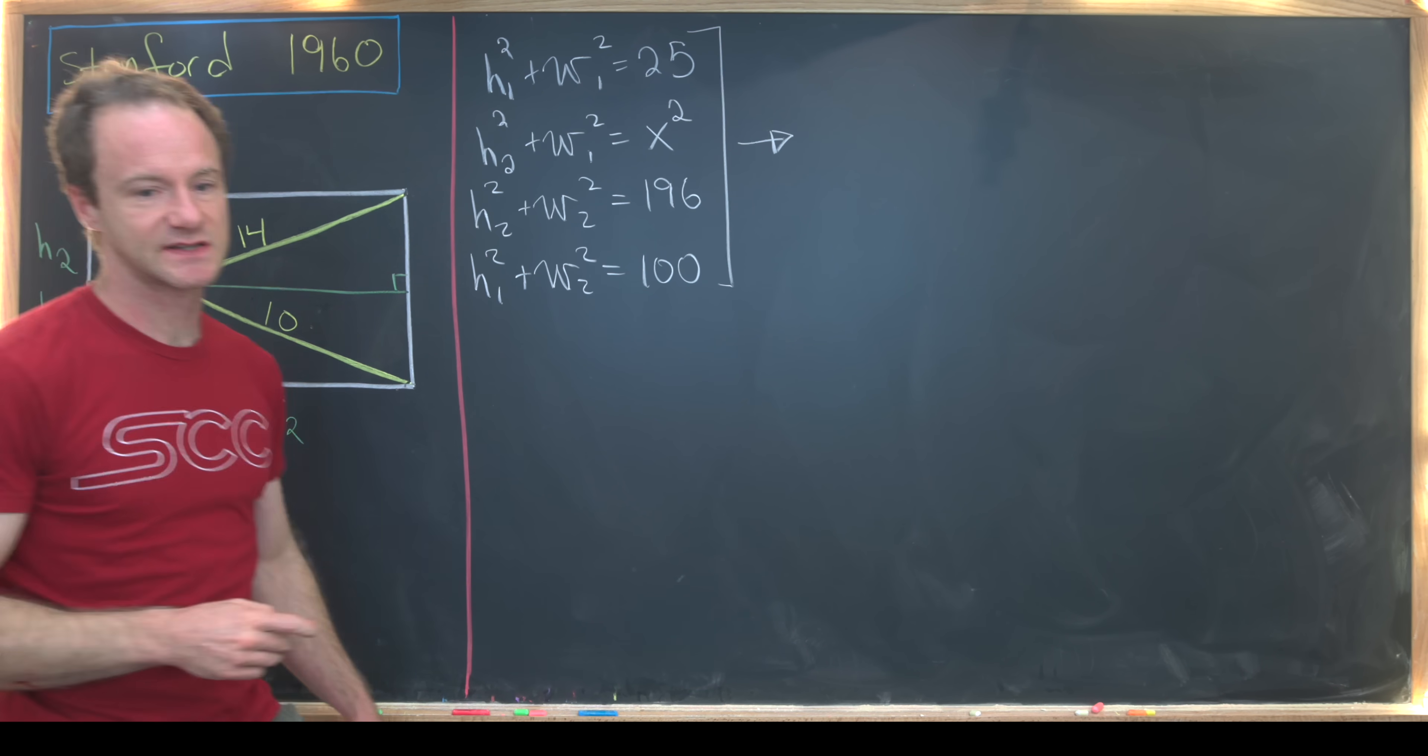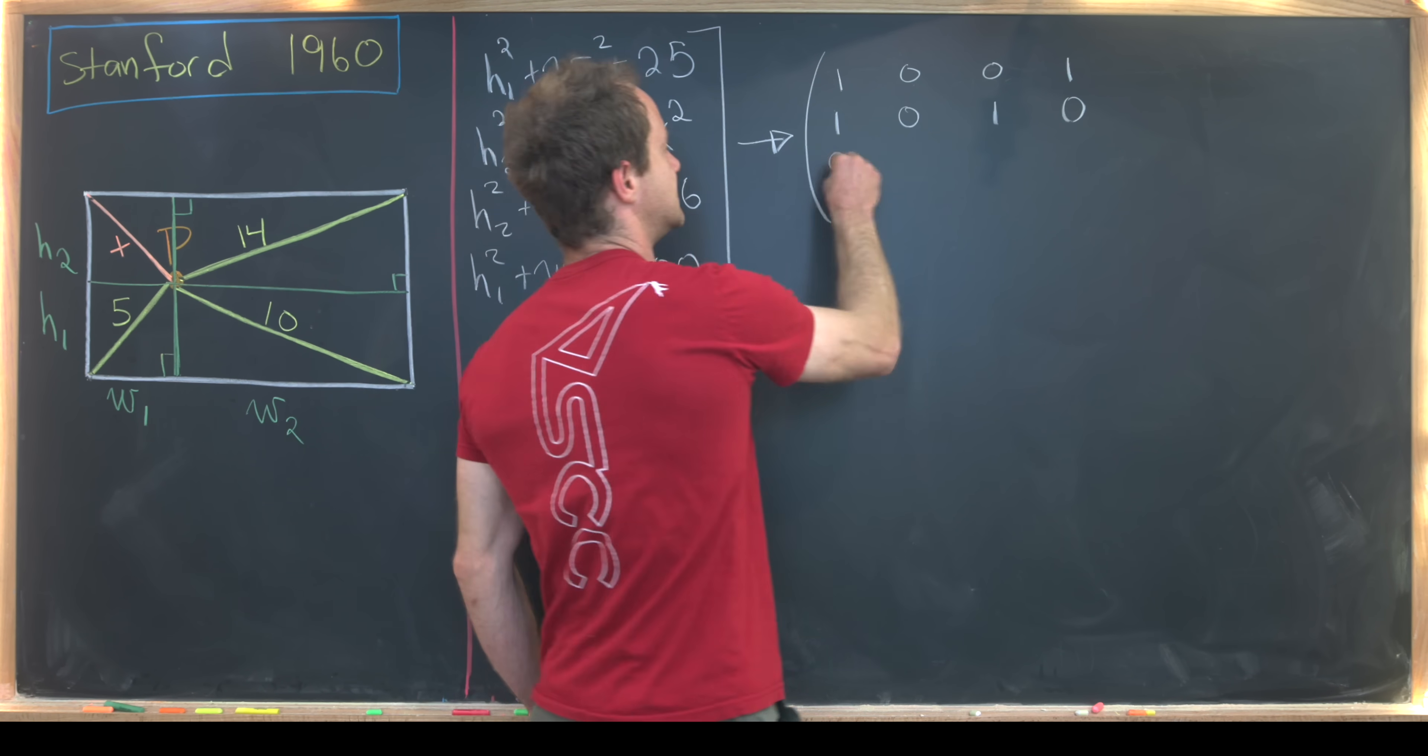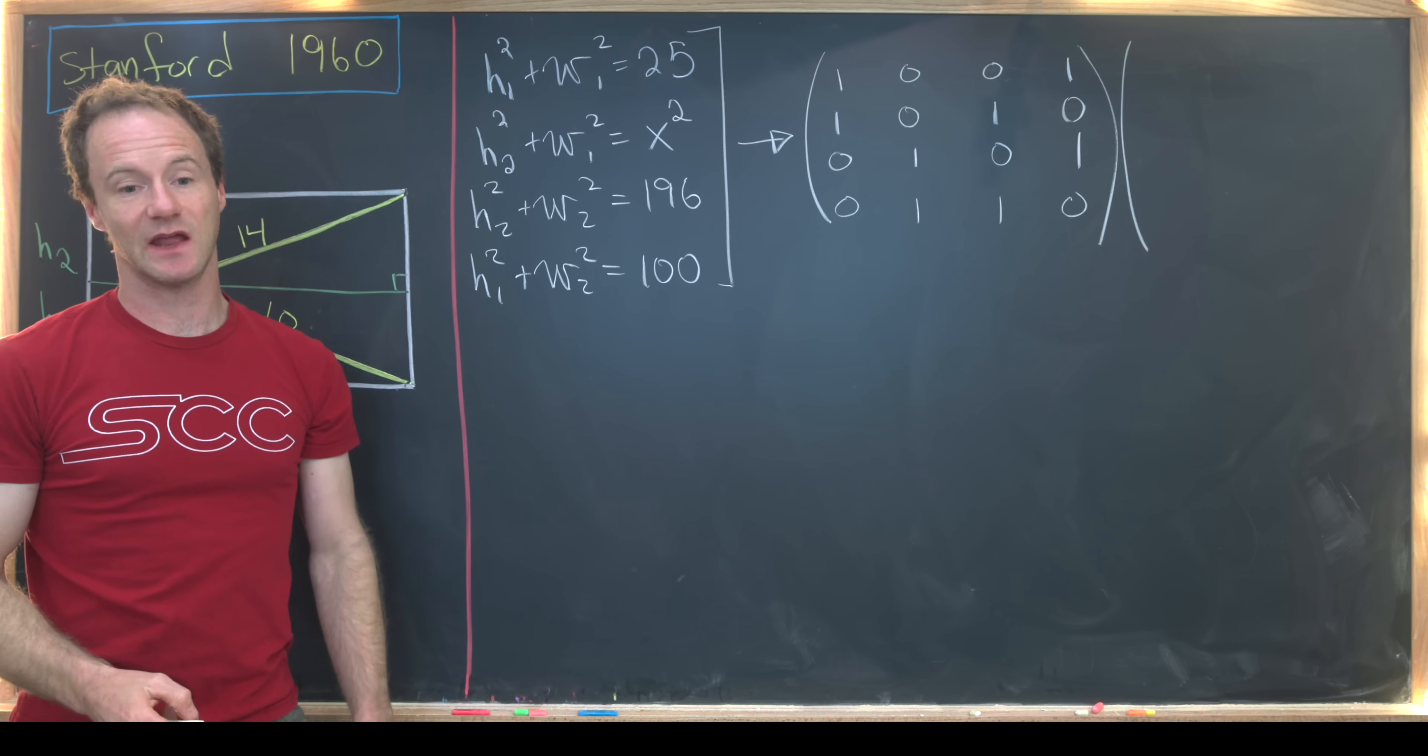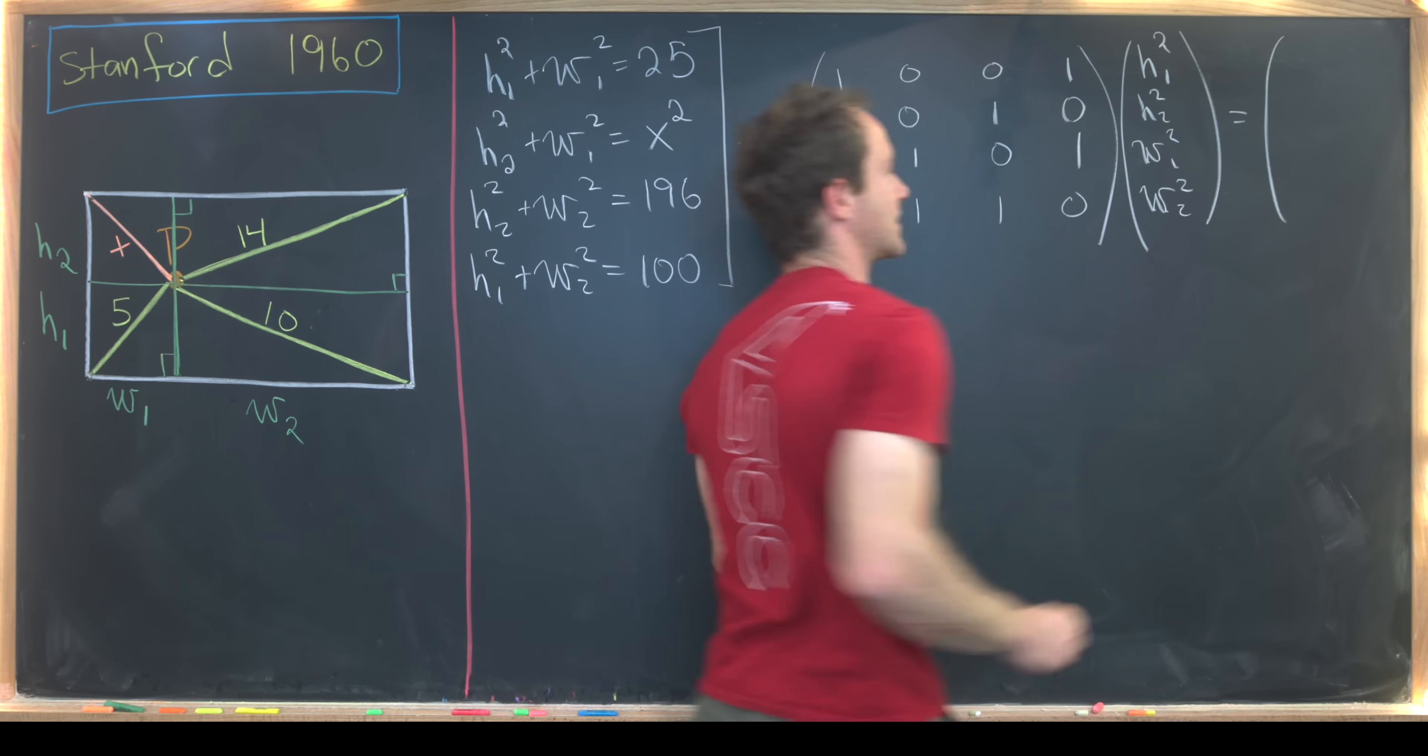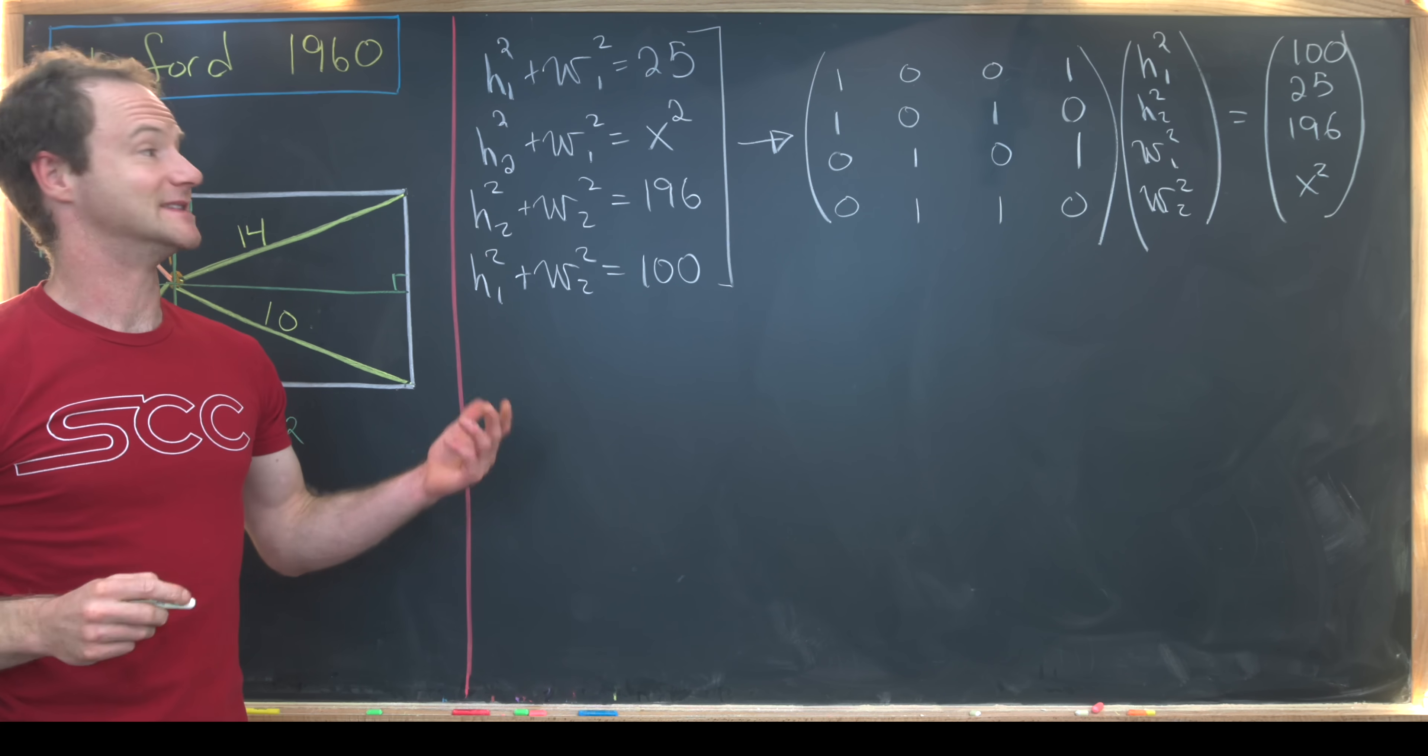Let's notice that this is the same thing as the following matrix equation. We have [1,0,0,1; 1,0,1,0; 0,1,0,1; 0,1,1,0] times the vector described by these heights and widths. So I've put it in this order: h1², h2², w1², w2², and then finally over here on the right hand side of the equation, we have that is equal to the vector [100, 25, 196, x²]. So I've put these in a slightly different order, but I kind of did that for a reason.